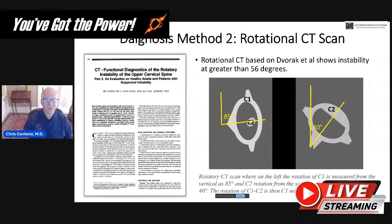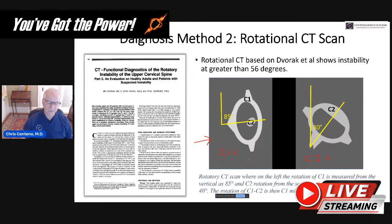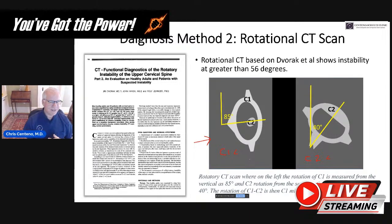Diagnosis method number two is rotational CT — basically measuring the angle of C1, then the angle of C2, and subtracting C1 from C2 to get a number. If that number is more than 56 degrees, that's a problem. In this CT scan they're rotating the head and usually taping it in that position, so it's not a comfortable test. In addition, a CT scan uses about 50 times more x-ray than a DMX, so there's a lot more x-ray exposure with this approach.